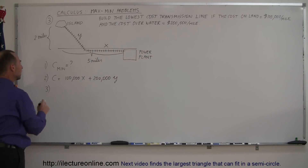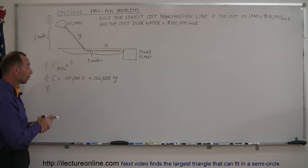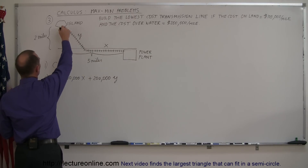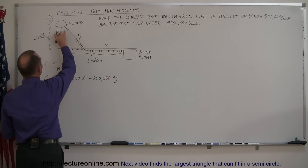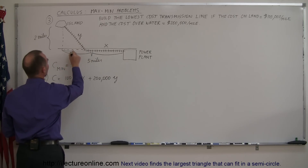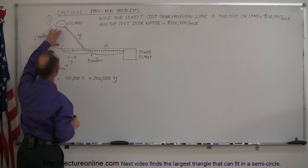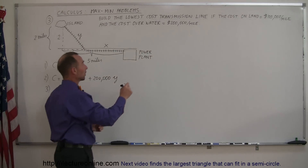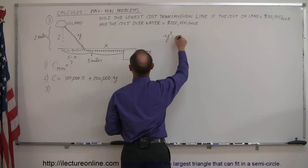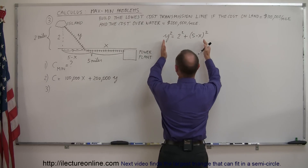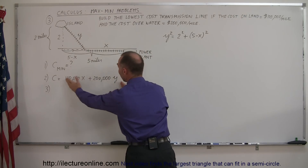Step three: since we have two variables x and y, we need to eliminate one using a constraint. We can express y in terms of x. Drawing a triangle, we use the Pythagorean theorem: this side squared plus this side squared equals the hypotenuse squared. The horizontal leg is (5 minus x), and the vertical distance from land to island is 2 miles. So the constraint is: y² = 2² + (5 − x)², and solving for y gives us the square root of that expression.